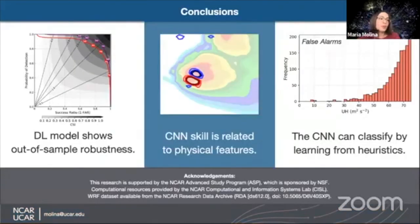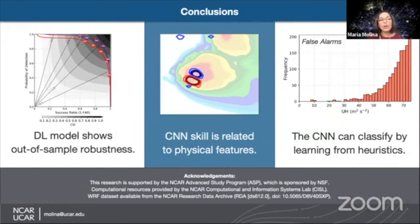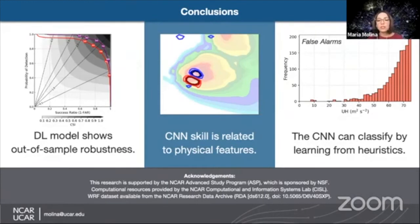To conclude, three highlights: our deep learning model can perform well even when faced with extreme outlier events associated with this classification task. Our convolutional neural network learned physically meaningful features, and it can also learn using heuristic label data — which, in more advanced cases for other weather or climate examples that use expert systems to create label data, may be a very useful application for detection tasks as well.